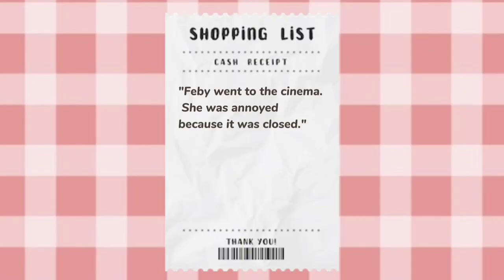Anaphoric Reference. During communication, it's almost impossible to always use short expressions separately — the sentence would be very long, ineffective, and monotonous. So we use kinds of reference. There are three kinds of reference. The first one is anaphoric reference, which occurs when the nouns are at the beginning. For example: 'Febby went to the cinema. She was annoyed because it was closed.' Here, the pronoun 'she' refers to Febby, and 'it' refers to the cinema. The explanation of Febby and the cinema comes earlier than the pronouns, which is why this position is called anaphoric reference.